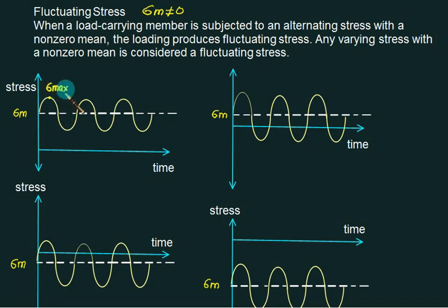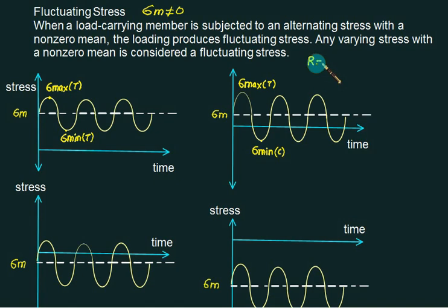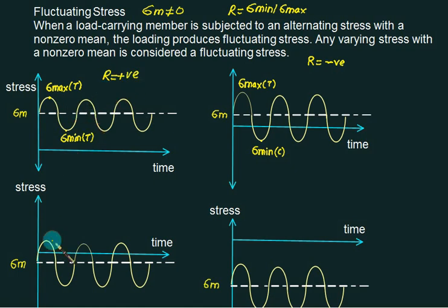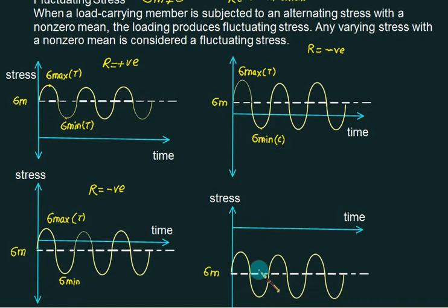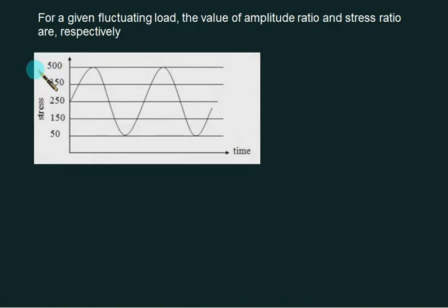Looking at all cases, the dotted line represents mean stress. Sometimes mean stress is positive, sometimes less positive, sometimes less negative, and sometimes more negative. For the case where sigma mean is zero, we have two classifications: sigma m equal to zero, and sigma m not equal to zero — the latter is called fluctuating stress. For fluctuating stress, sigma max can be tension while sigma minimum is compression, giving a negative r value. When both sigma max and sigma mean are positive, r is a positive value.